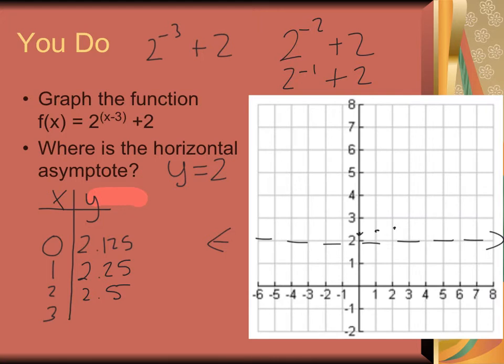And then, if I plug in 3, I'm going to have 2 to the 0 plus 2, so that's 1 plus 2 is 3. You know, why don't we keep going a little bit more? If I plug in 4, because now we're starting to get some better, nicer numbers. If I plug in 4, I'm going to end up having 2 to the 1st, which is 2 plus 2 is 4.